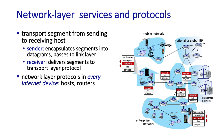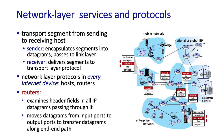Routers are the principal network layer devices within the network core, and a router's job is pretty simple: it receives datagrams from a neighboring host or router on an input link and forwards that datagram to the appropriate outgoing link.